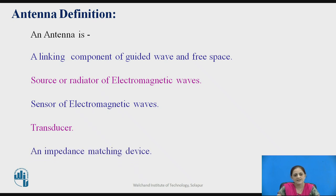An antenna is also used as an impedance matching device. For effective and efficient transmission of the signal, there should be matching of impedance on both sides — that is, at the source side and the load side.